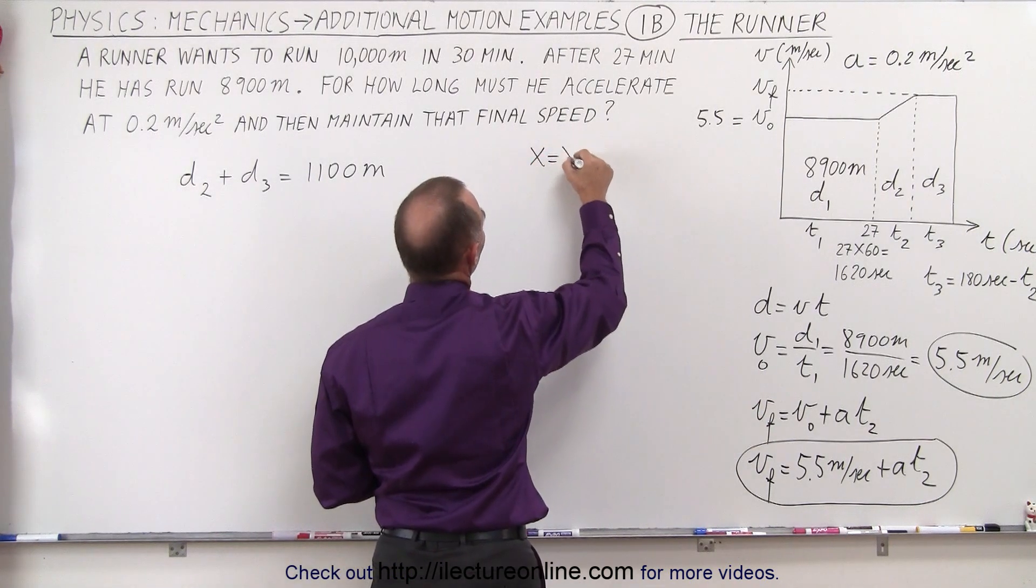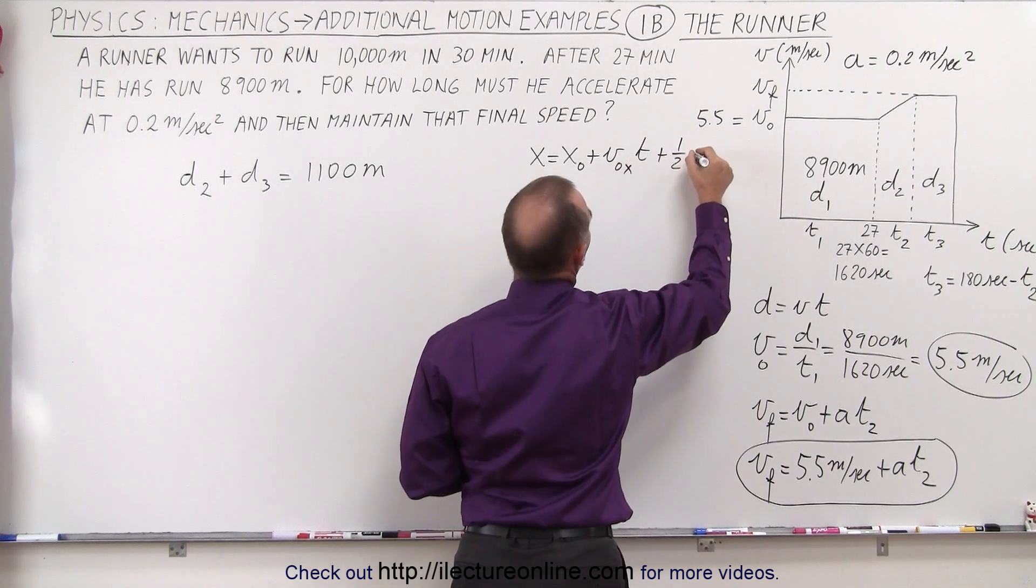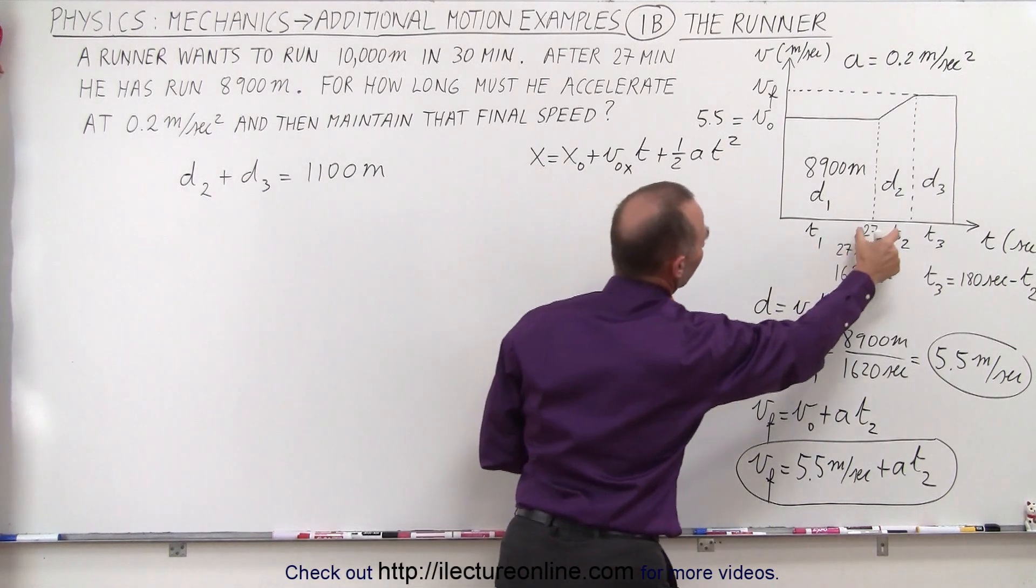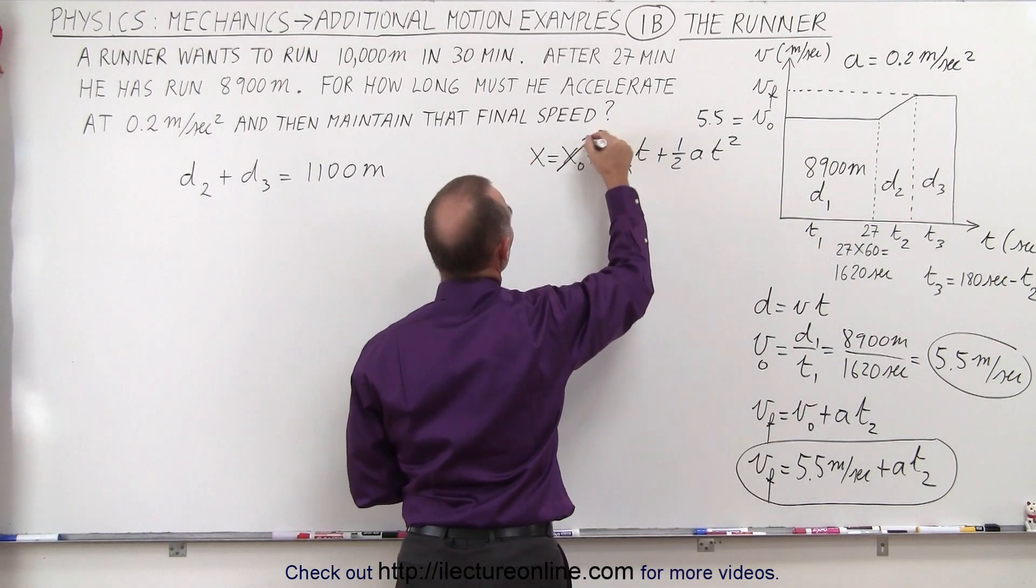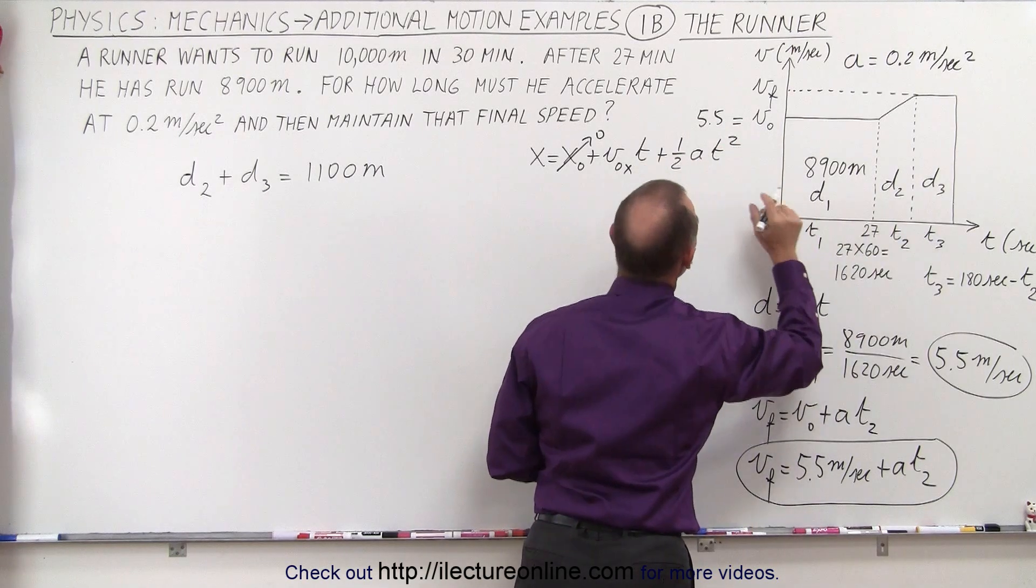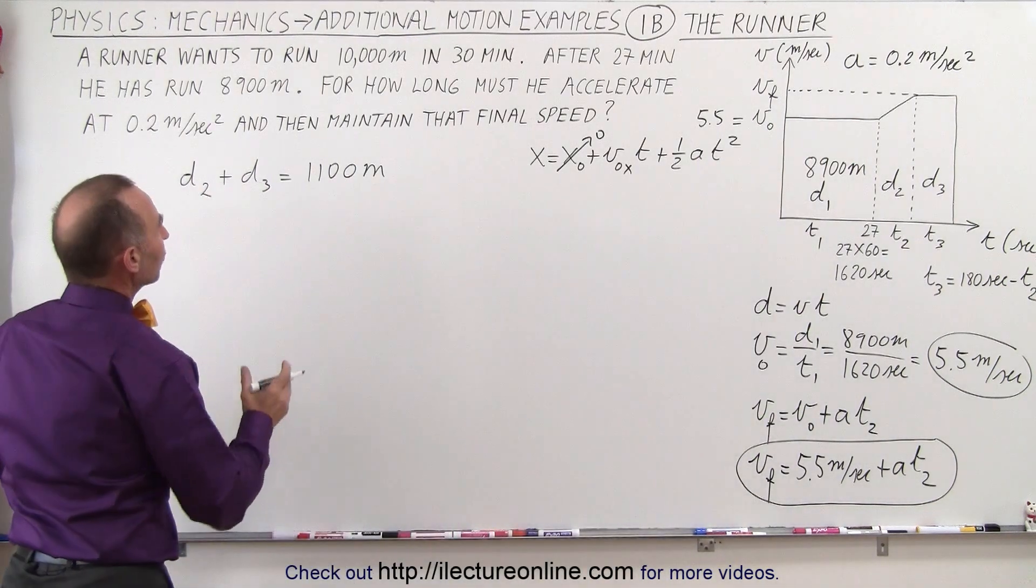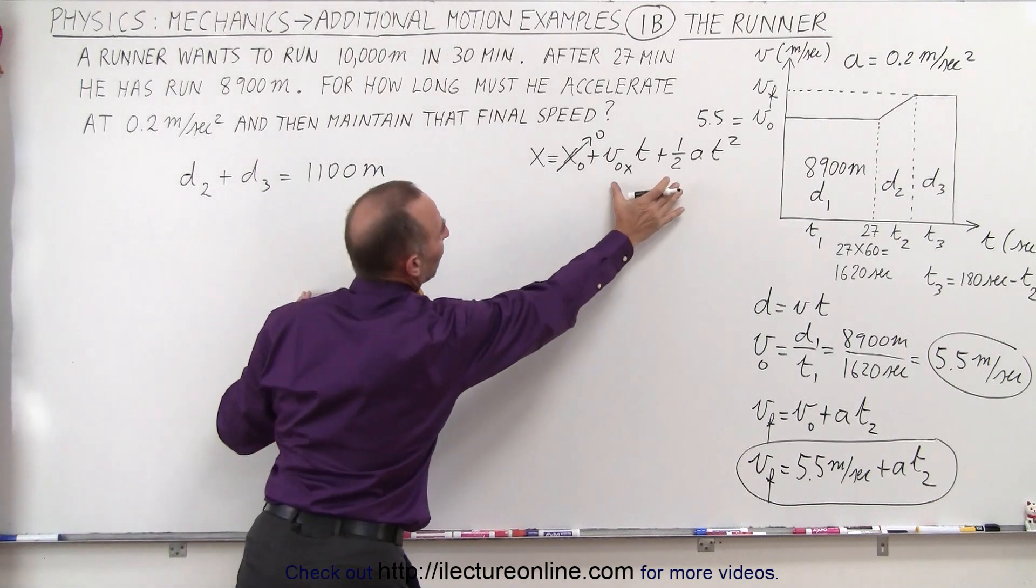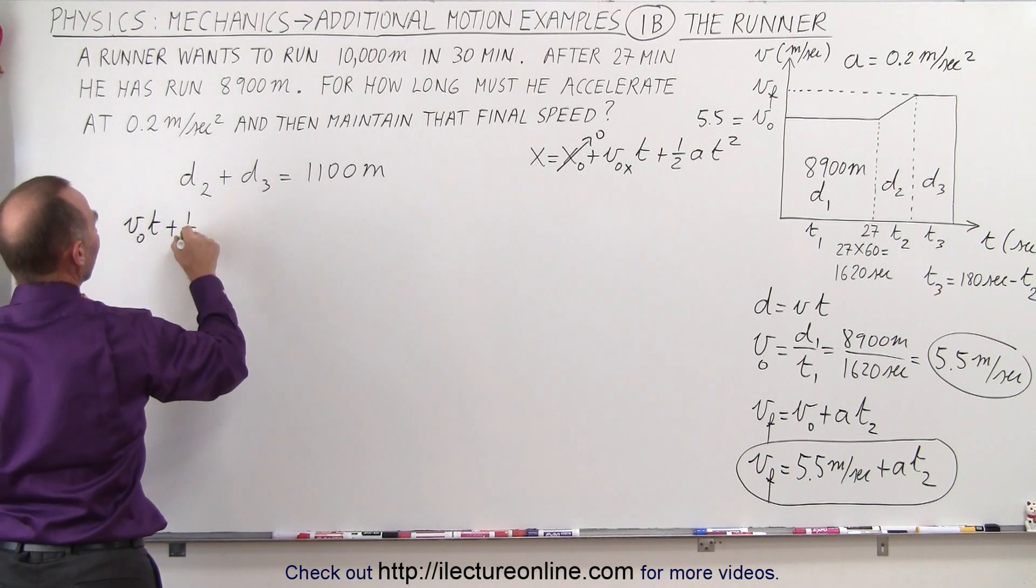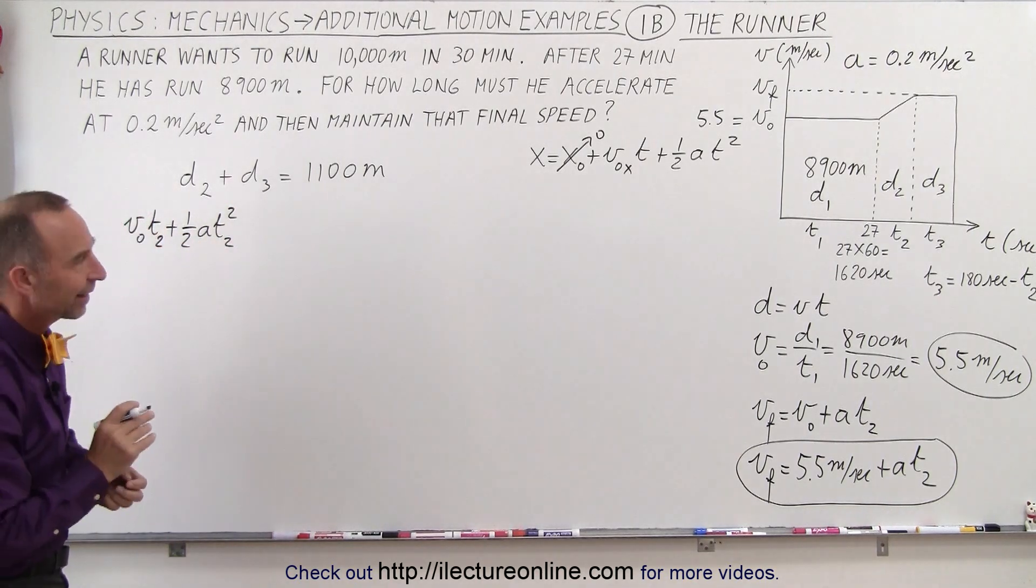We're going to need x is equal to x sub 0 plus v sub 0 in the x direction times time plus 1 half at squared. So we can call the initial distance for that time period equal to 0 because we're going to start over there. So the distance traveled is going to be the velocity it has over here times the time that we spent doing that velocity plus the acceleration, half of the acceleration times the time squared. So what we're going to do here for d2 now is plug in what we have over here. So we can write this as v initial times time plus 1 half the acceleration times time squared. This, of course, is t2. That's the time period of that second segment.